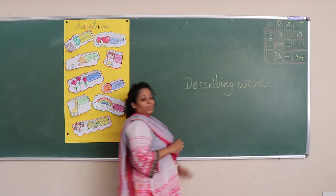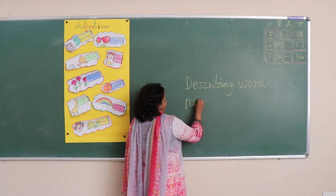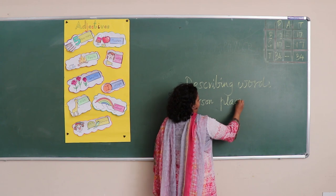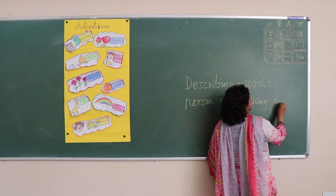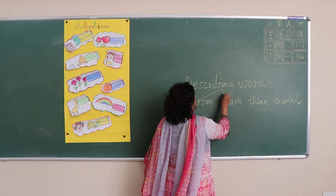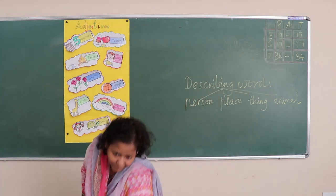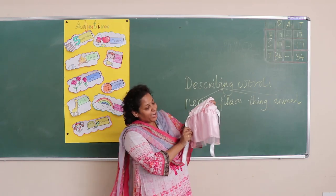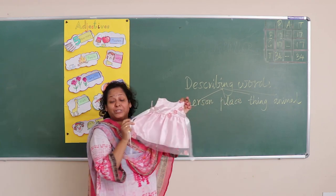So these describing words — they describe a person, a place, a thing or an animal. Let's see some words that describe this frog. Shall we describe this frog? Beautiful frog.